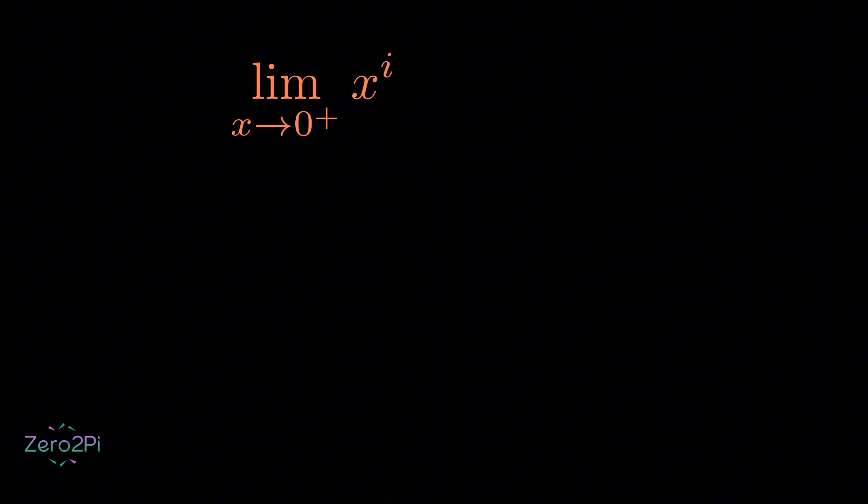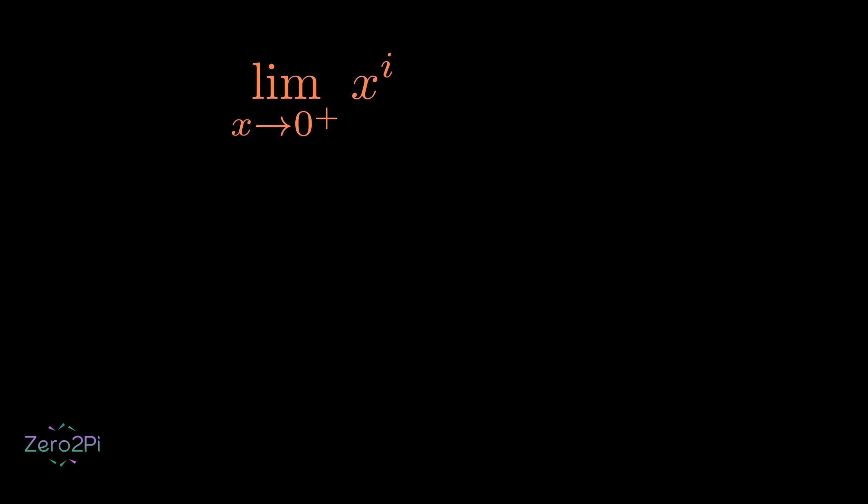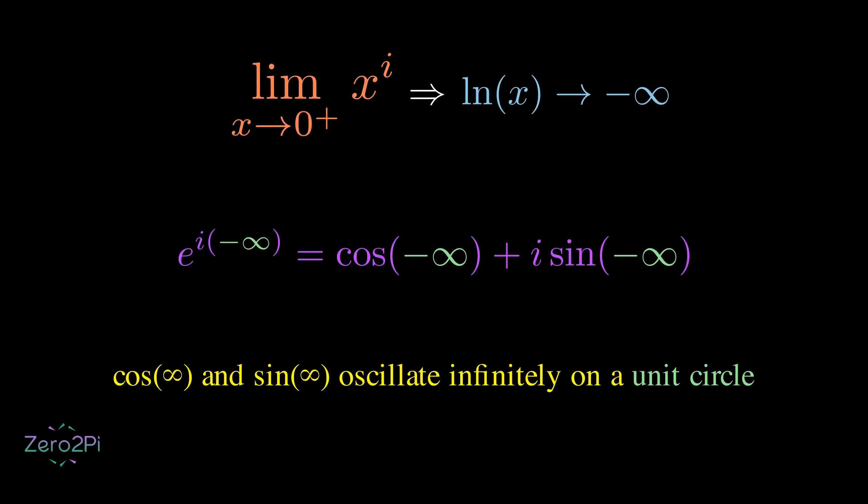Let's take a deeper look and start with the first path, approaching zero from the positive side. As x gets smaller and smaller, the natural log of x drops lower and lower and heads toward negative infinity. That means our expression becomes e raised to the power of i times negative infinity. And we know that when the angle gets extremely large in the negative direction, the cos and sine don't settle on one value. They keep looping and oscillating forever around the unit circle.